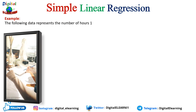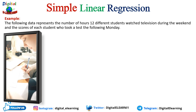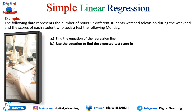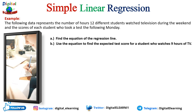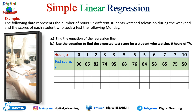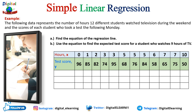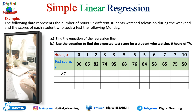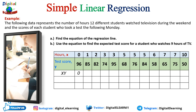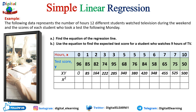Let's look at a simple example. The following data represents the number of hours 12 different students watched television during the weekend and the score each student received on a test the following Monday. We need to find the equation of the regression line and use it to find the expected score of a student who watched nine hours of television. x is the independent variable (hours watched) and y is the dependent variable (test score). We multiply x by y to get xy for each row.